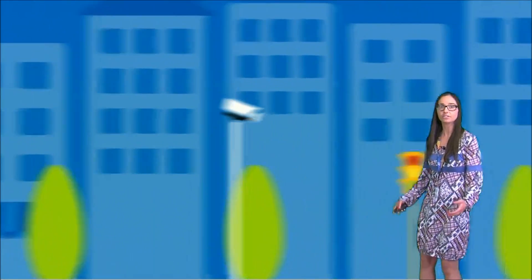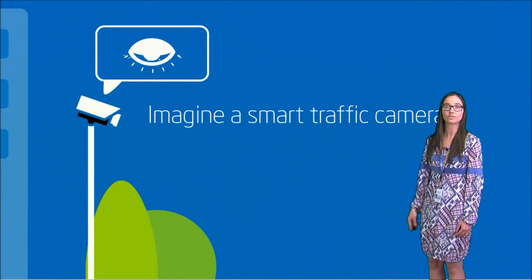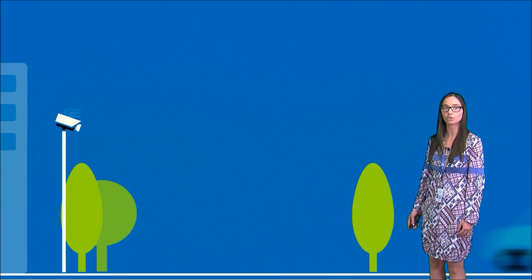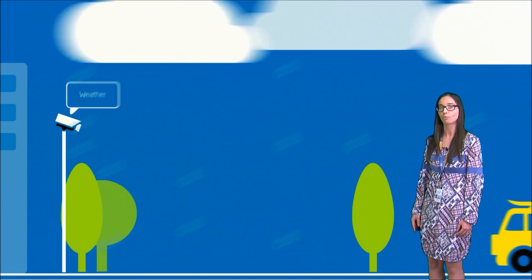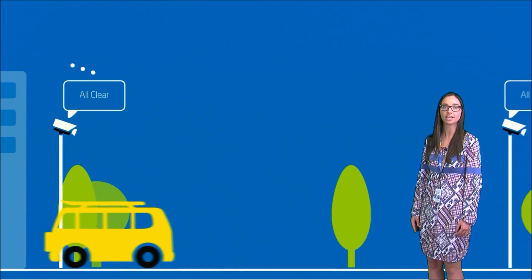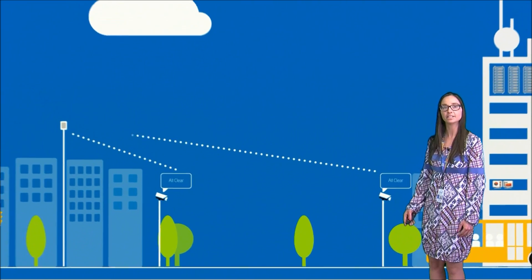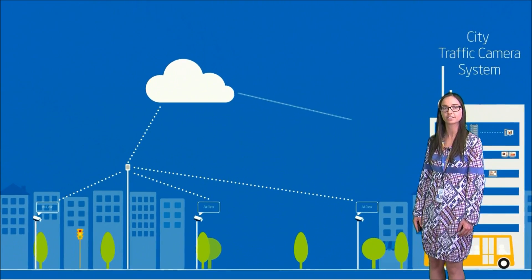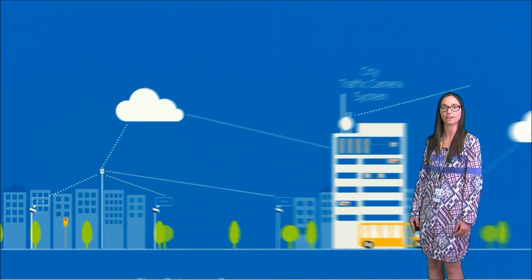So let's continue now with a short example. Here is a smart traffic camera. The camera can monitor the road, accidents, as well as weather conditions, and communicate that status to gateways that combine it with data from other devices to create an intelligent city-wide traffic system.